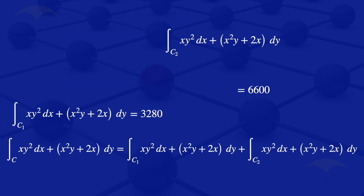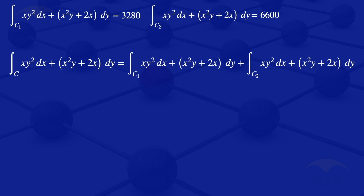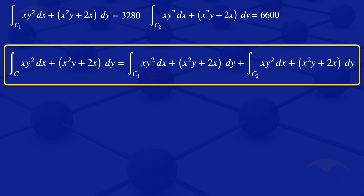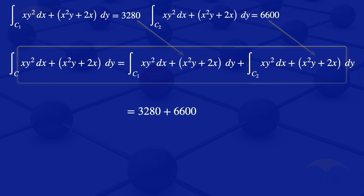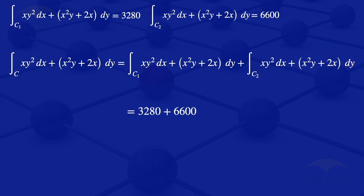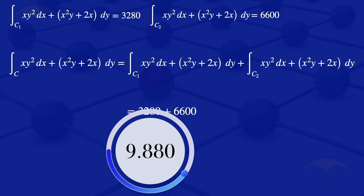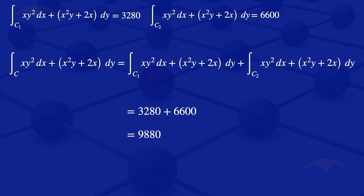We have found the integral along C1 = 3280 and the integral along C2 = 6600. Since the integral along C is the sum of the two, we get 3280 + 6600 = 9880. Therefore, the integral of xy² dx + x²y + 2x dy along the curve C equals 9880.